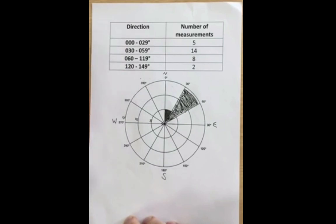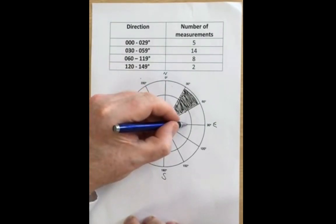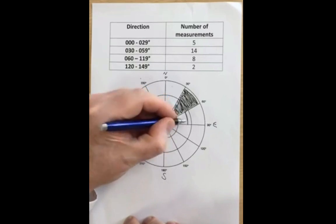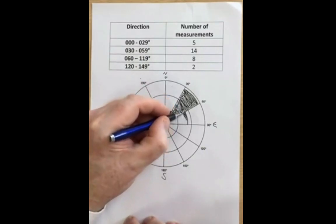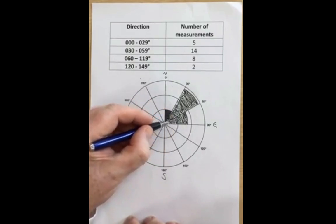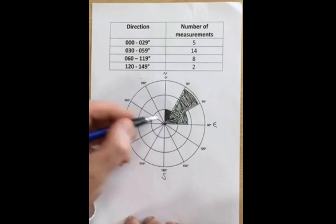The next one, we have eight measurements. So again, we're drawing a line in that part of our rose diagram and shading in to represent those values, if you like representing the bar.